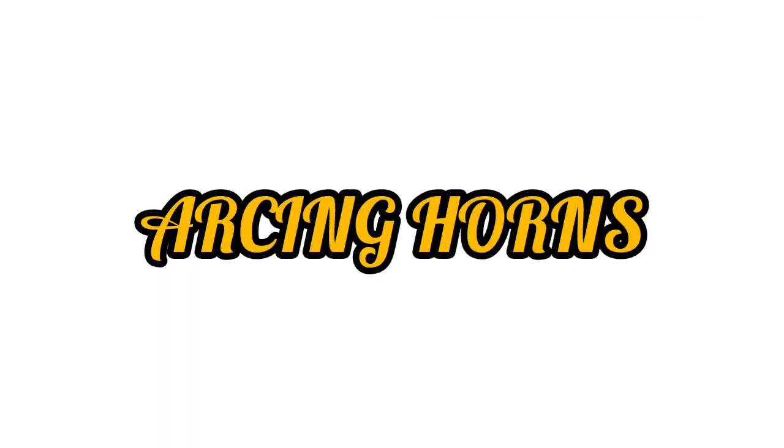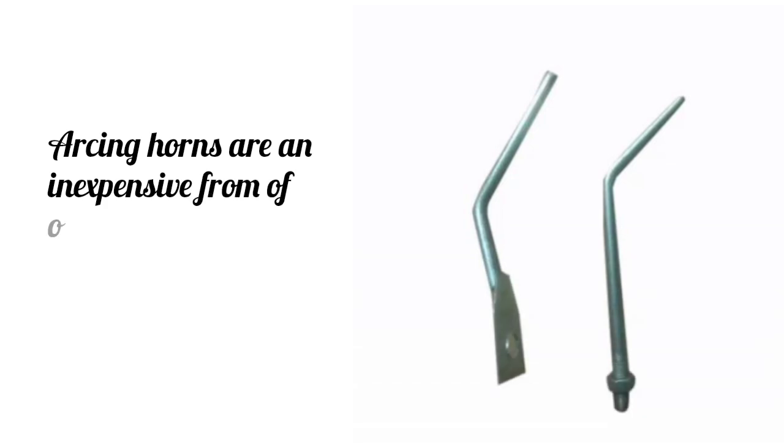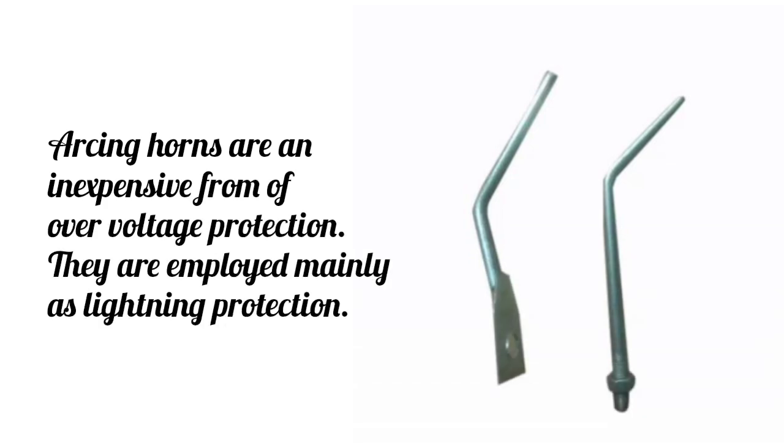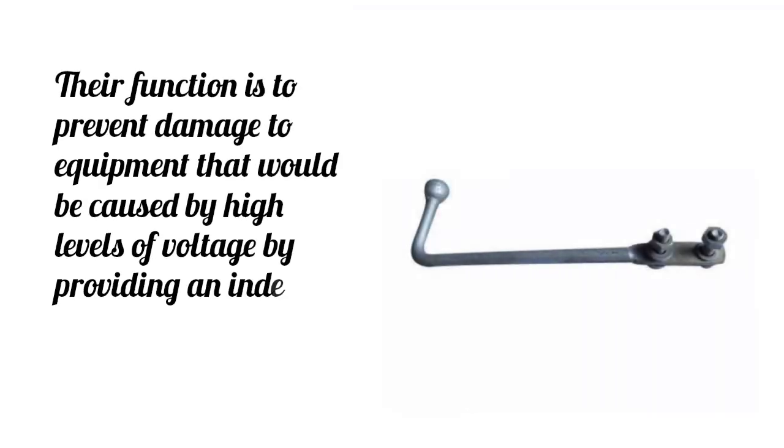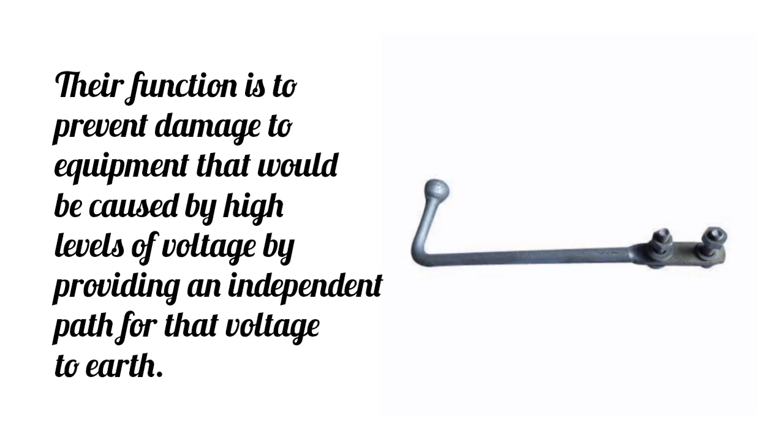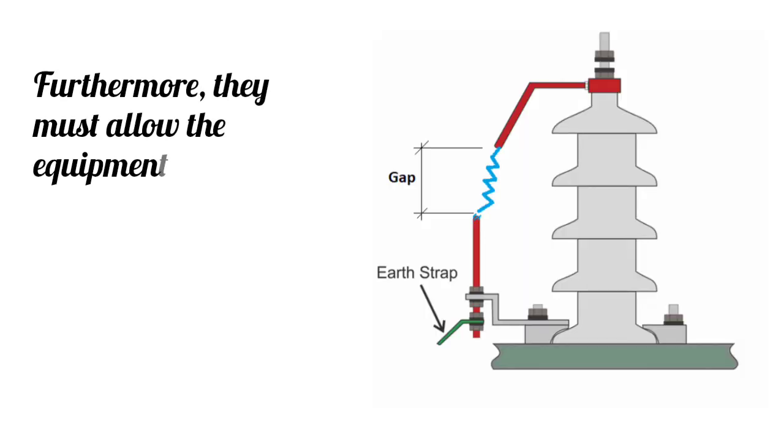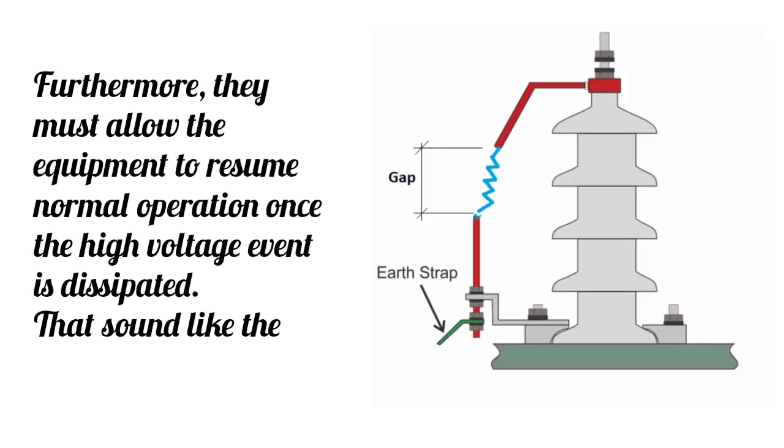Arcing Horns. Arcing Horns are an inexpensive form of over-voltage protection. They are employed mainly as lightning protection. Their function is to prevent damage to equipment that would be caused by high levels of voltage by providing an independent path for that voltage to earth. Furthermore, they must allow the equipment to resume normal operation once the high-voltage event is dissipated.